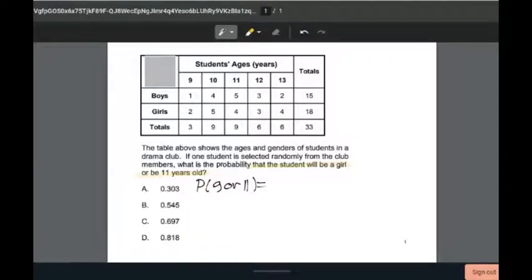This is the probability of the student randomly selected being a girl plus the probability of the student randomly selected being 11 years old minus the probability of the student randomly selected being a girl and being 11 years old.